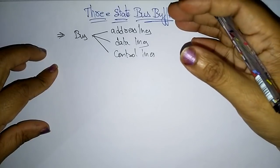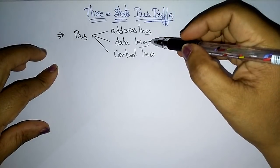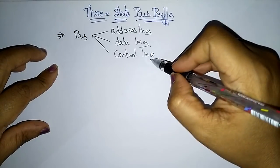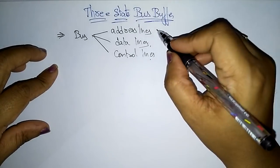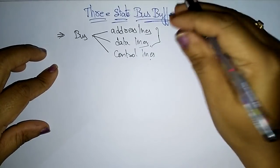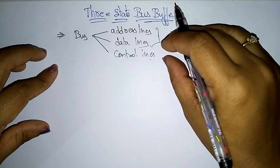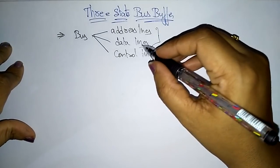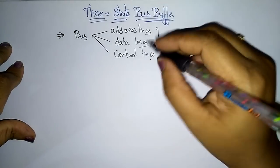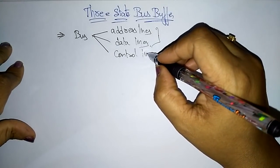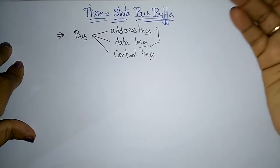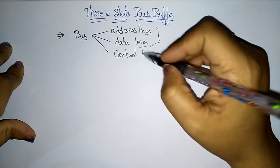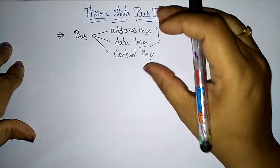Data lines consist of or hold the data, whereas control lines are used to control all the operations performed on both the address and data lines. The control lines send signals to the data lines to take the data, and they send signals to the address lines indicating where to get and where to put the data. So everything is controlled by the control lines.